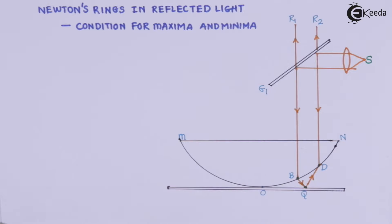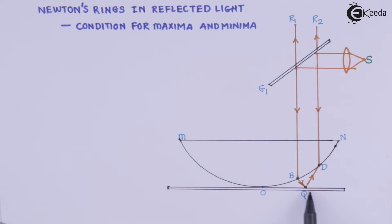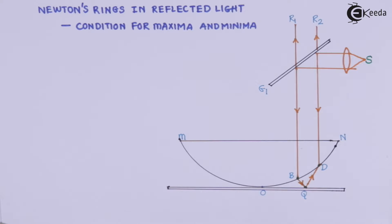Consider a particular ray — it will strike the bottom of the plano-convex lens at point B. At point B, since there is a change in medium, there will be refraction and the ray will get refracted away from the normal. That refracted ray will then impinge at point G on the bottom glass plate.